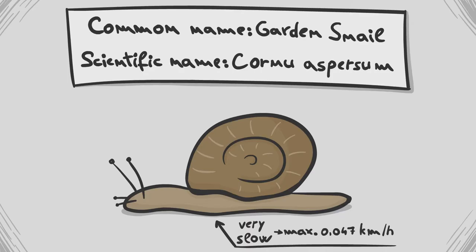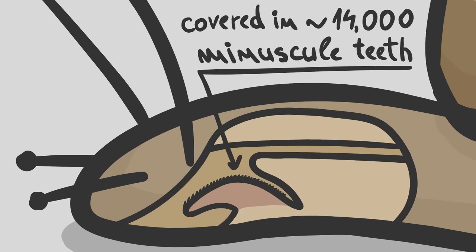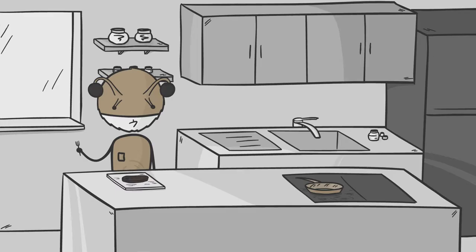Garden snails also scrape their food with a so-called radula, a tongue-like thingy covered in approximately 14,000 minuscule teeth. That means that you would be able to eat overcooked steak just by licking it.